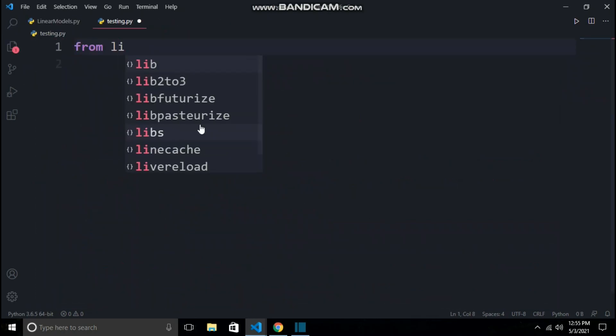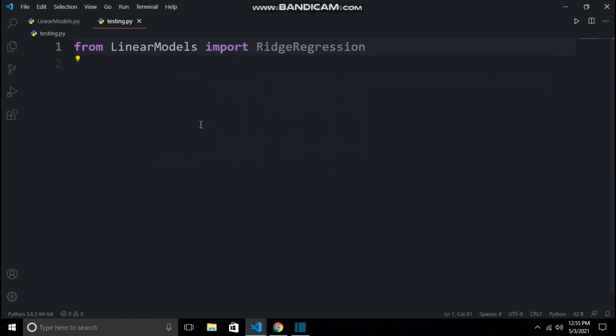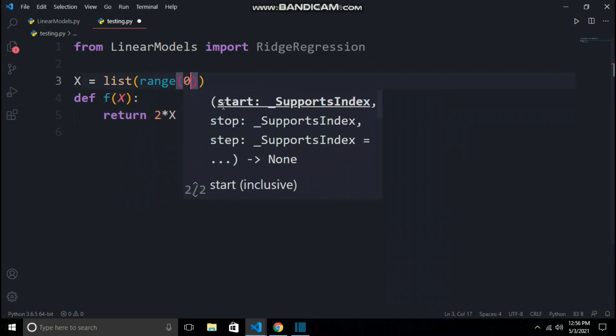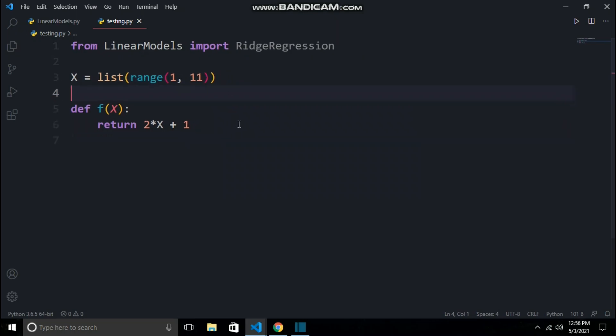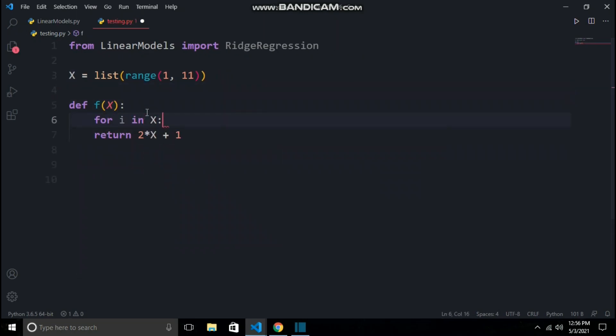Now let us test our algorithm. I will create a new file named testing.py and we will import ridge regression class from our linear_models.py. Now we will create data where the relationship between x and y is y equals 2x plus 1. Here 2 is the value of weights and 1 is the bias. X contains all the values from 1 to 10.